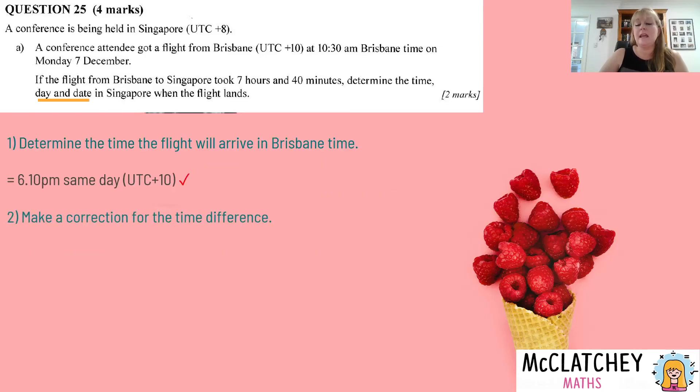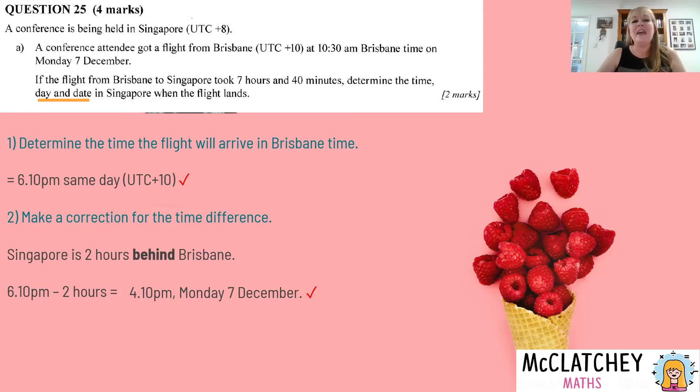So that's now still on Brisbane time. Now I need to make the adjustment for the time zones. So my next step is that correction for the time difference. We already saw in our little time sketch that Singapore is two hours behind. So we take two hours away from that answer and we end up with 4:10 p.m. Now notice I've underlined in the question day and date. If you just wrote 4:10 p.m., not good enough. You also have to give the day and the date and that will give you the full second mark.